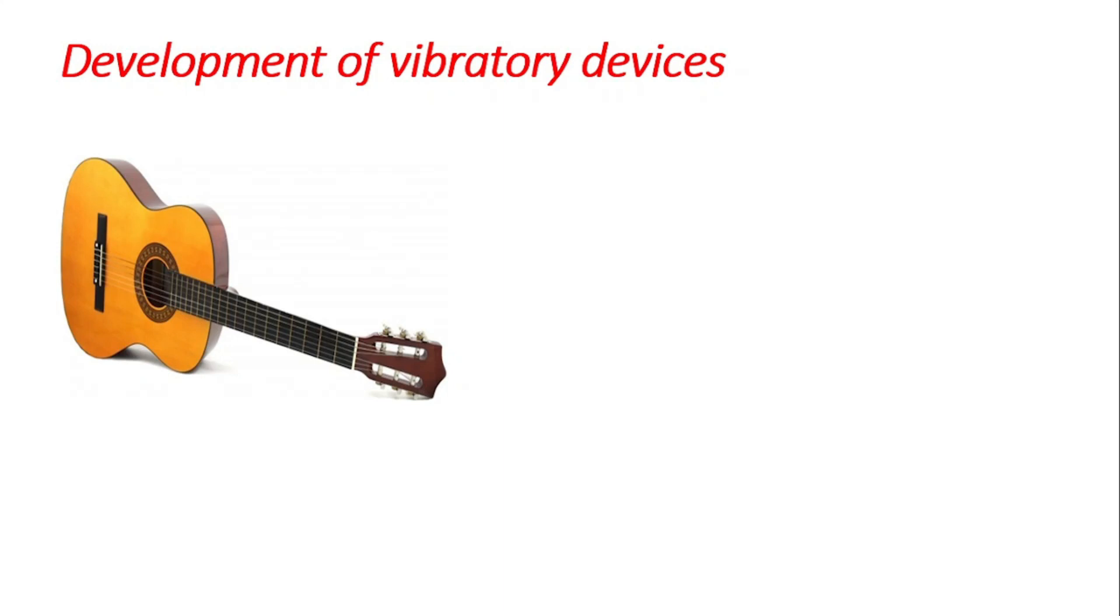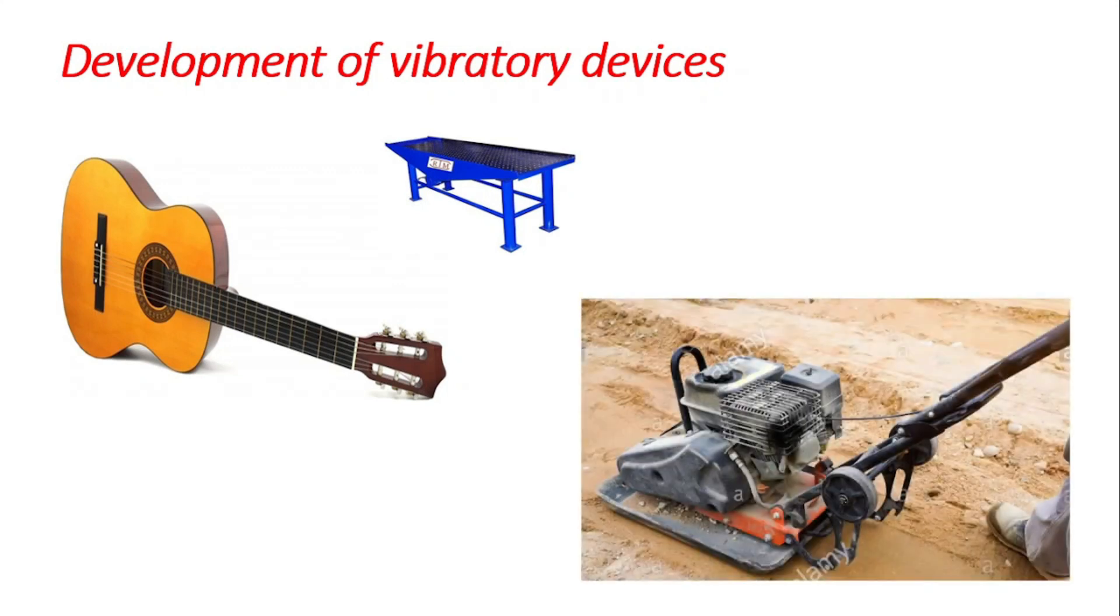There are several other areas and several other machineries that can be developed or that have been developed based on the principle of vibrations. We have a mechanical sieve, for example, which is a particular device that separates particles of different sizes by causing these particles, when you place them on the sieve, to agitate over time. There are several other applications. Even in civil engineering, there's this machine they call a pilar that is used to compact soil during construction processes. It also works based on the principles of vibration.